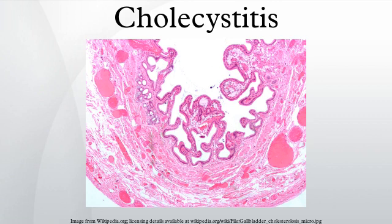Complications include perforation or rupture, ascending cholangitis, Rokitansky-Aschoff sinuses, emphysematous cholecystitis, bile leak, bile duct injury, abscess, wound infection, bleeding, hernia, organ injury, deep vein thrombosis, pulmonary embolism, and fatty acid and fat-soluble vitamin malabsorption. Gallbladder perforation is a rare but life-threatening complication of acute cholecystitis.